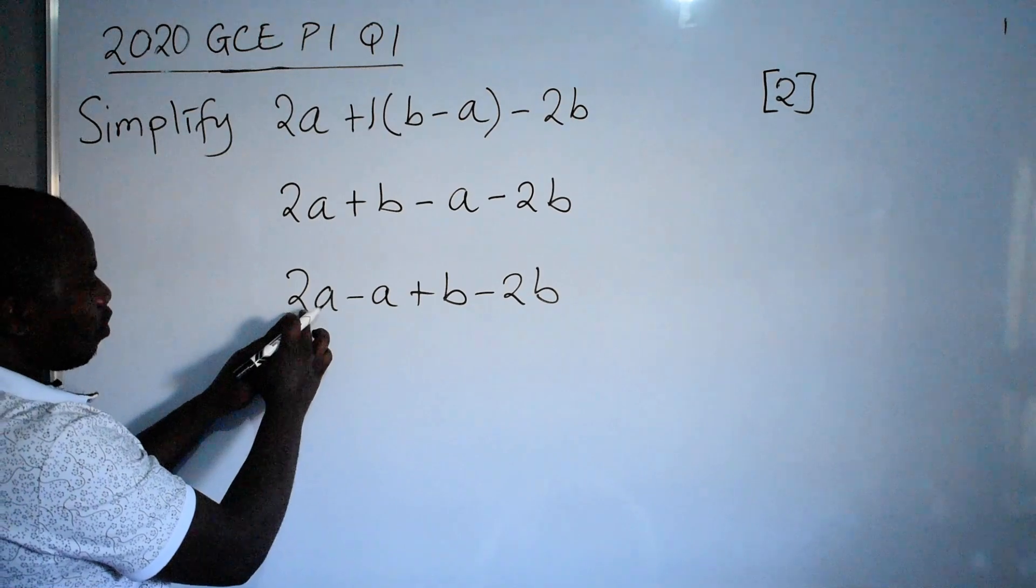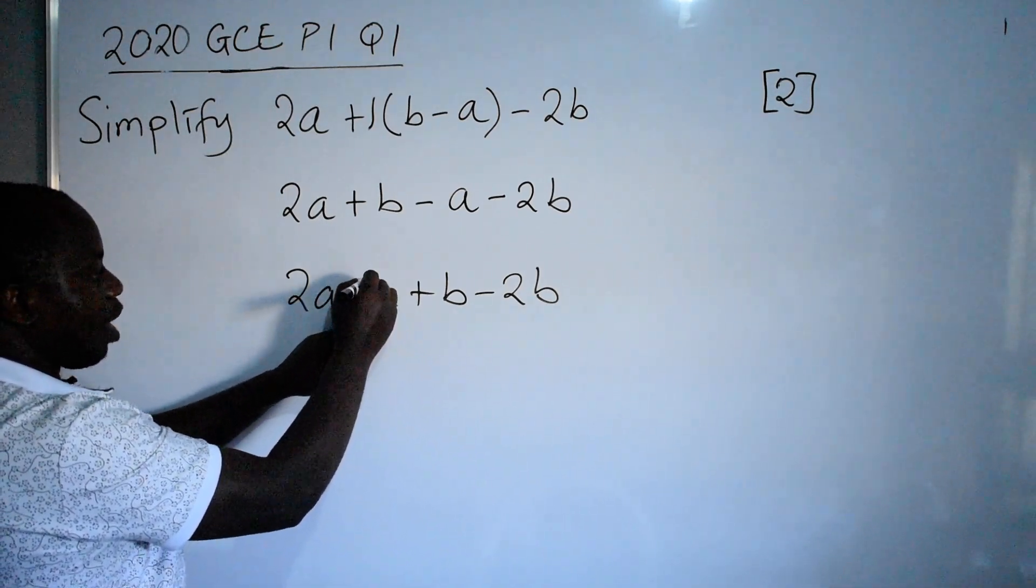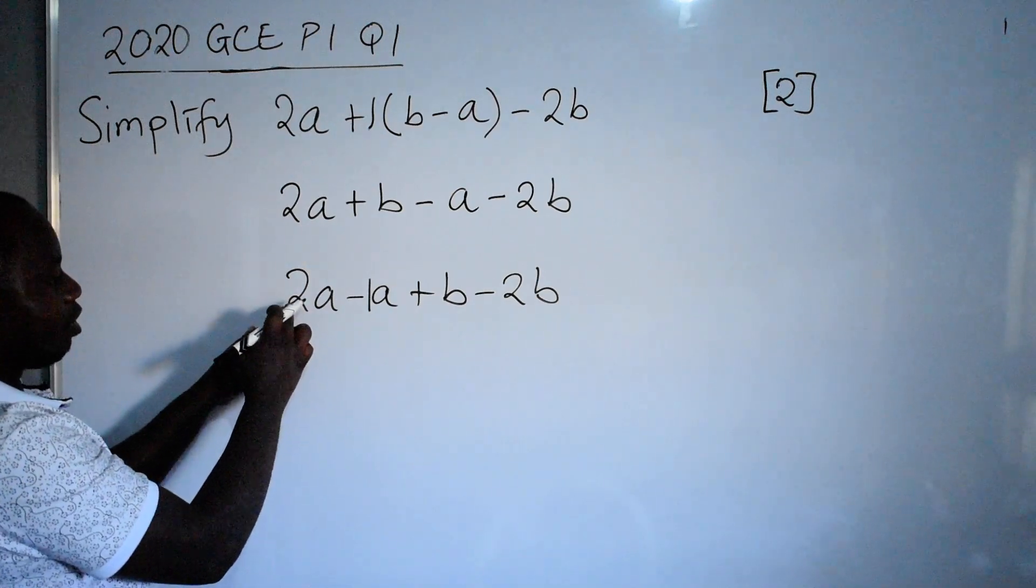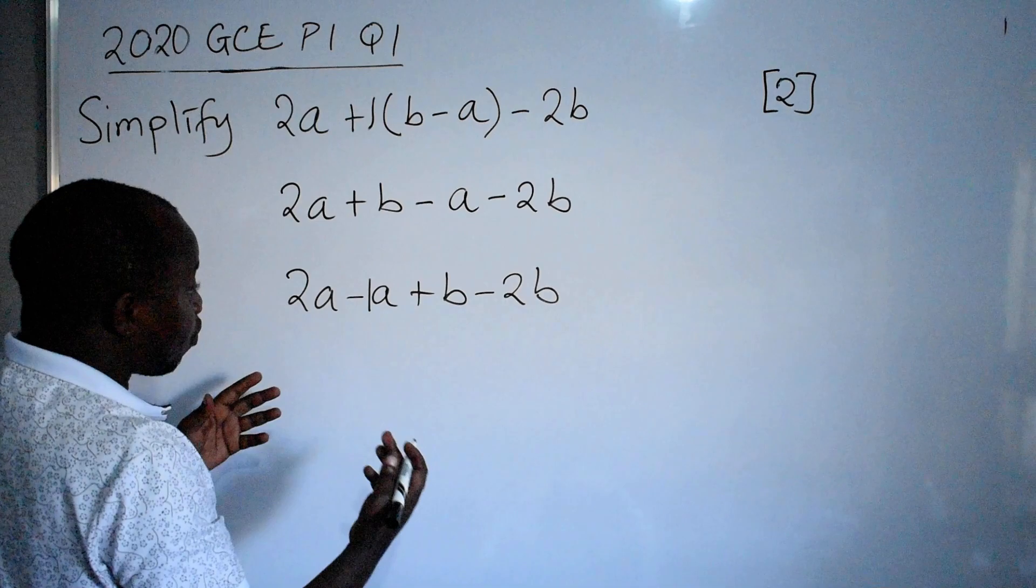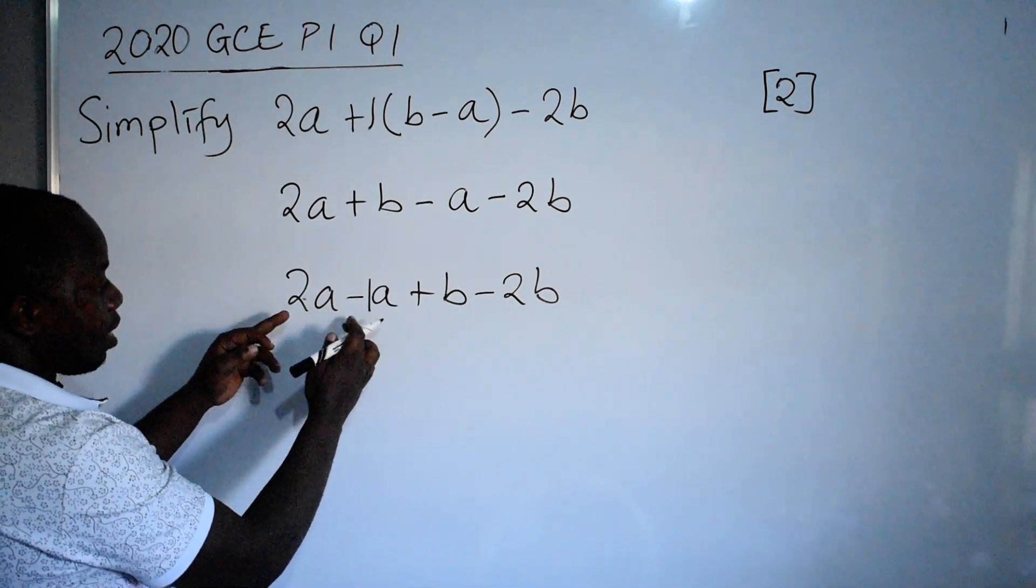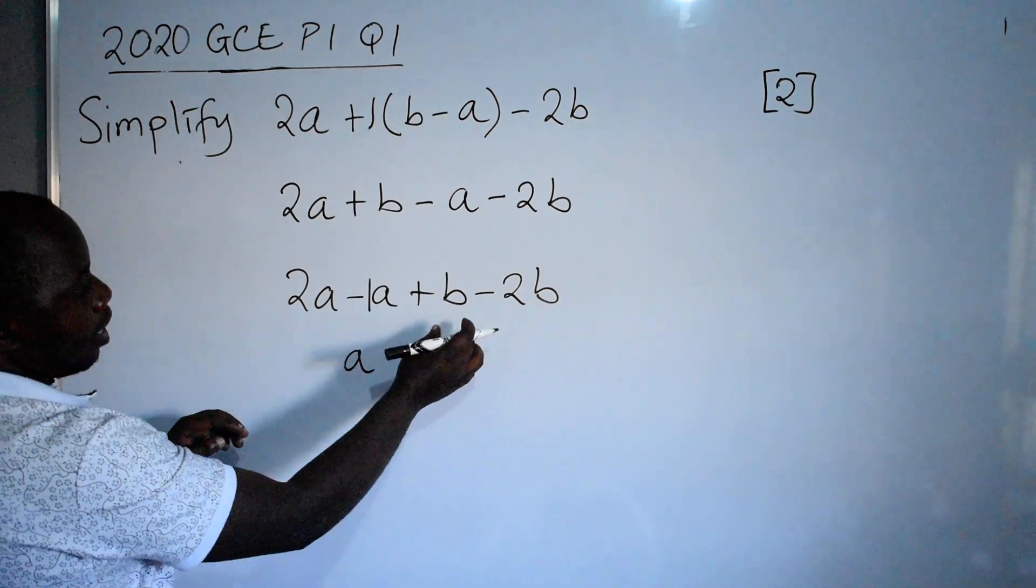Then, what is 2a minus a? Here, it means we have a 1. So that is the same as saying 2 minus 1. That is 1. So that 1, because we have the variable a here, we are not going to say 1a. You just say a.